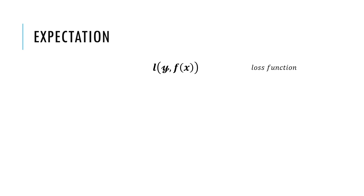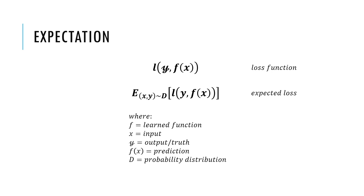In the first part of this series, we discussed the loss function, which simply computes the error from our prediction compared to the truth. We write the expected loss as an expectation, where f is our learned function, x is the input, y is the output or the corresponding label to x, f of x is the output of our learned function given input x — which is just y-hat, our prediction — and d is the probability distribution.